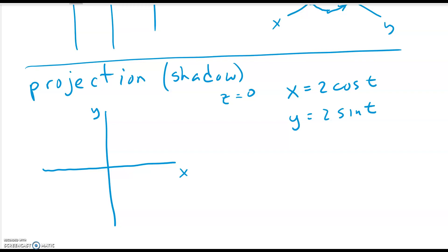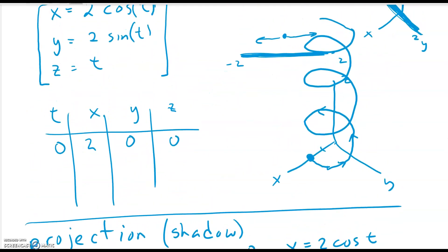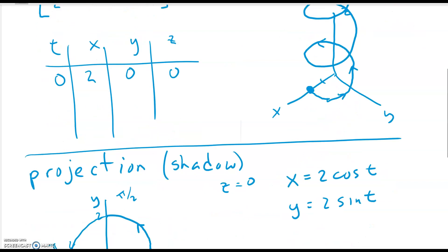At time 0, cosine of 0 is 1 times 2, so we start at x equals 2 and y equals 0. As t increases, cosine goes down and sine goes up. When t is pi over 2, sine is 1 and cosine is 0, so the arrow goes in that direction. When t is pi, cosine is negative 1 and sine is 0, and it just continues to rotate. That is the projection of the spiral in two dimensions — if you look at the three-dimensional surface straight from above, you'll just see a circle.